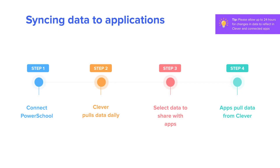Syncing data from PowerSchool to applications is a four-step process. First, your district will create a read-only connection between PowerSchool and Clever. Once access is granted, Clever securely pulls the data from PowerSchool and makes it available in the Clever platform. Districts retain full ownership of their data in Clever. As such, you will set sharing permissions that authorize which data to share with each of your connected applications. Finally, applications will sync with Clever to pull the data you have authorized to create accounts for students and teachers.